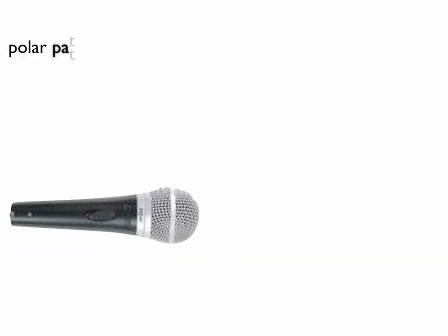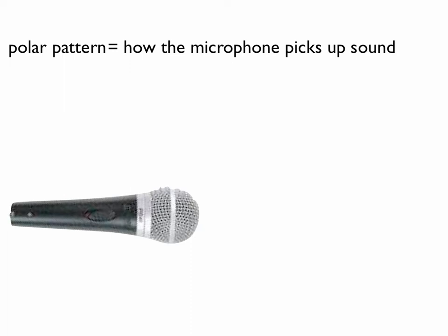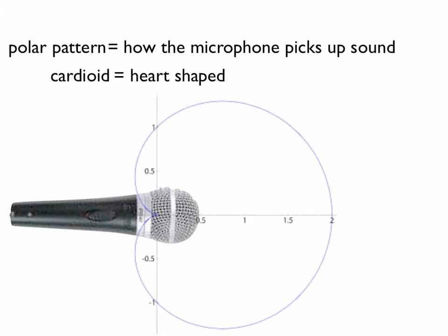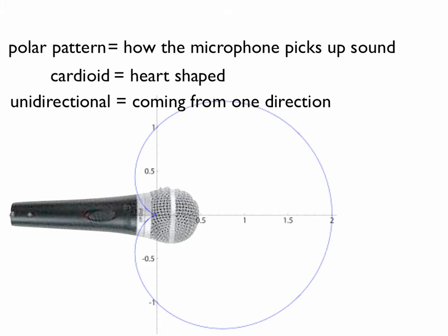Microphones have certain characteristics. The one that's important for our introduction is the polar pattern — the way that the microphone picks up sound around it. This microphone is a vocal mic. It has what's called a cardioid pattern. Cardioid sounds like 'heart,' and that's why — cardioid is a heart-shaped pattern, you can see it here. It's going to pick up things mostly aimed at the front of it, but also a little bit from the back and sides, and virtually nothing from directly behind it. This microphone is also called unidirectional, meaning it picks up sound best when it's coming from one direction.